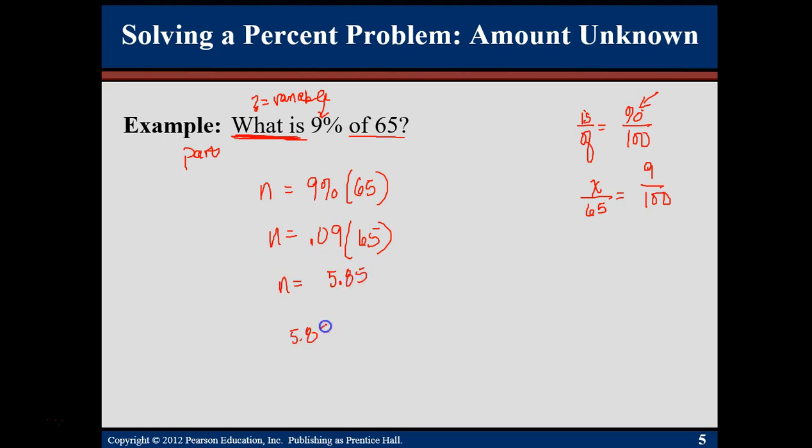So 5.85 is 9% of 65. How could we have estimated that? An easy way is to use a 10% rule. If you move the decimal over one spot to the left, you'll get a 10%. So 10% of 65 is 6.5. 9% is less than 10%. 5.85 is less than 6.5. So this looks pretty good.